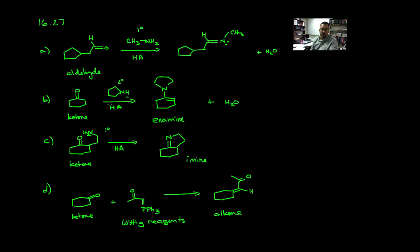Notice that in all of these processes, we're essentially transforming the C=O double bond into either C=N as an imine, enamine, or in this case, an alkene.